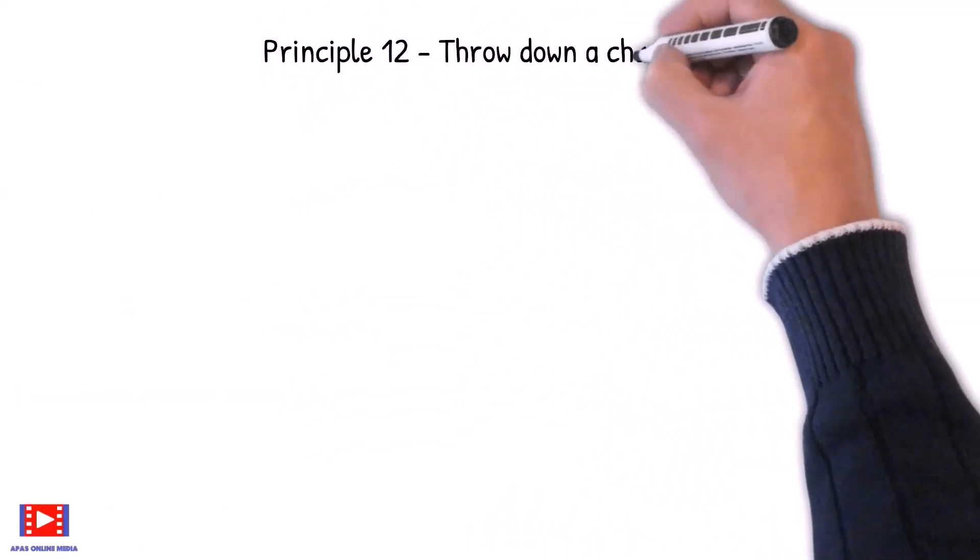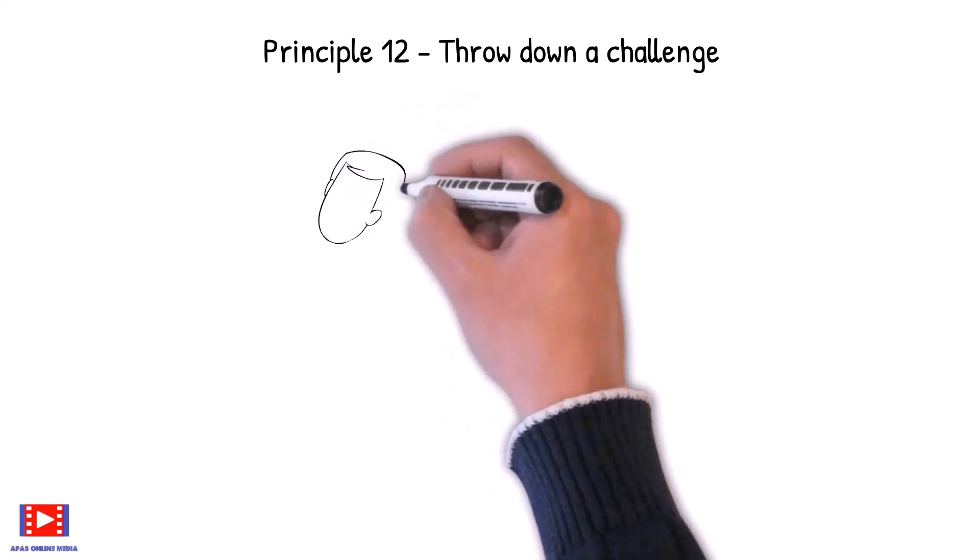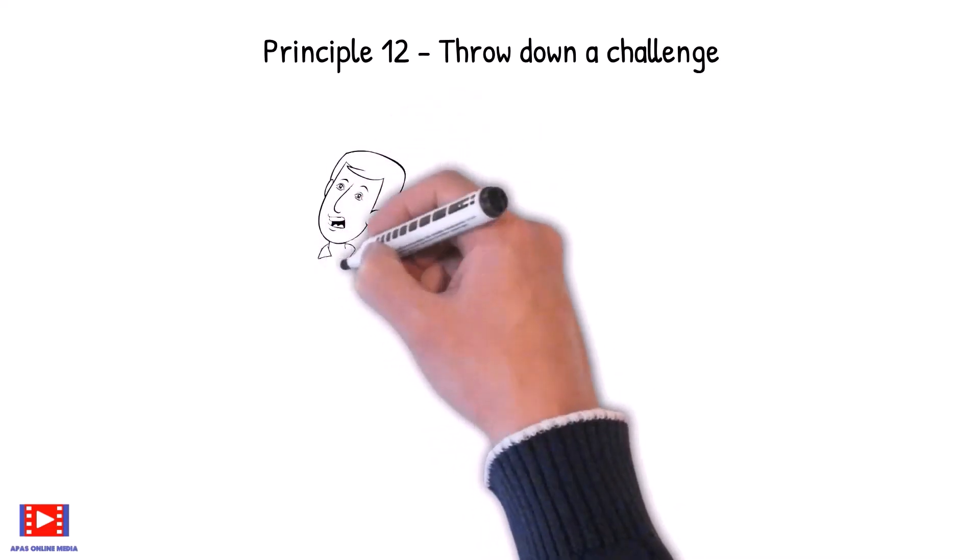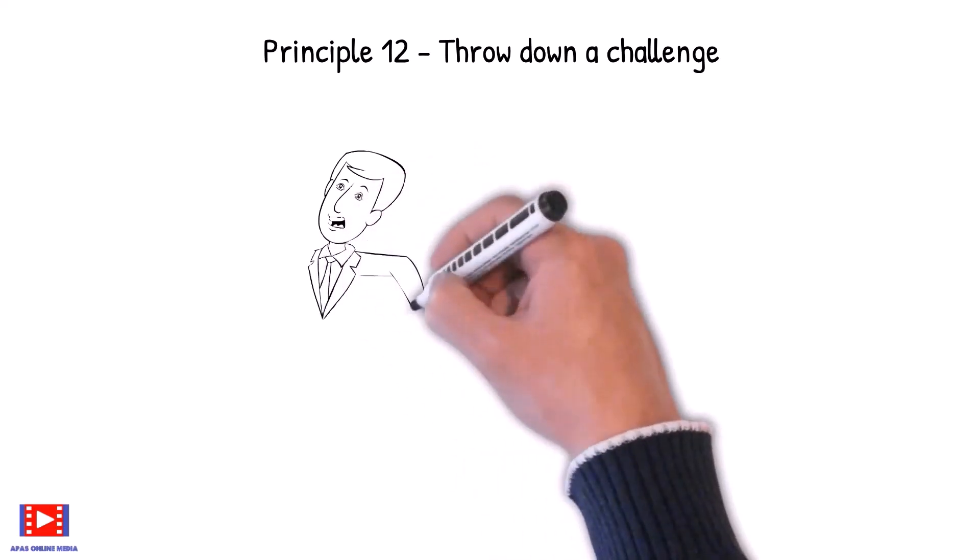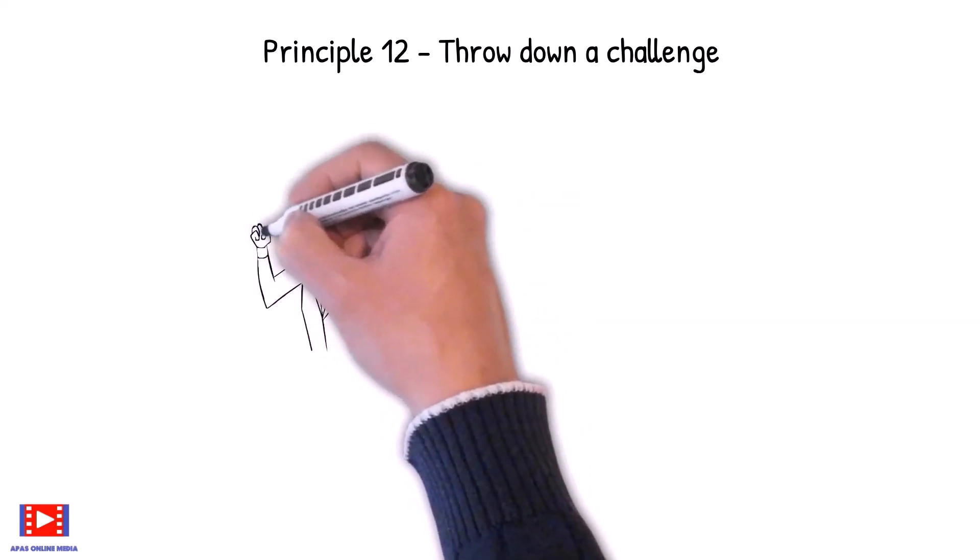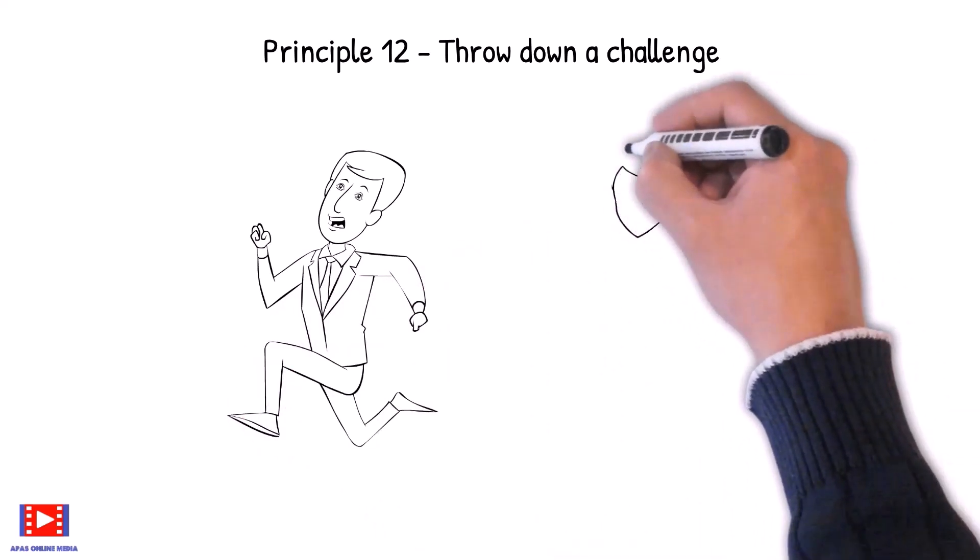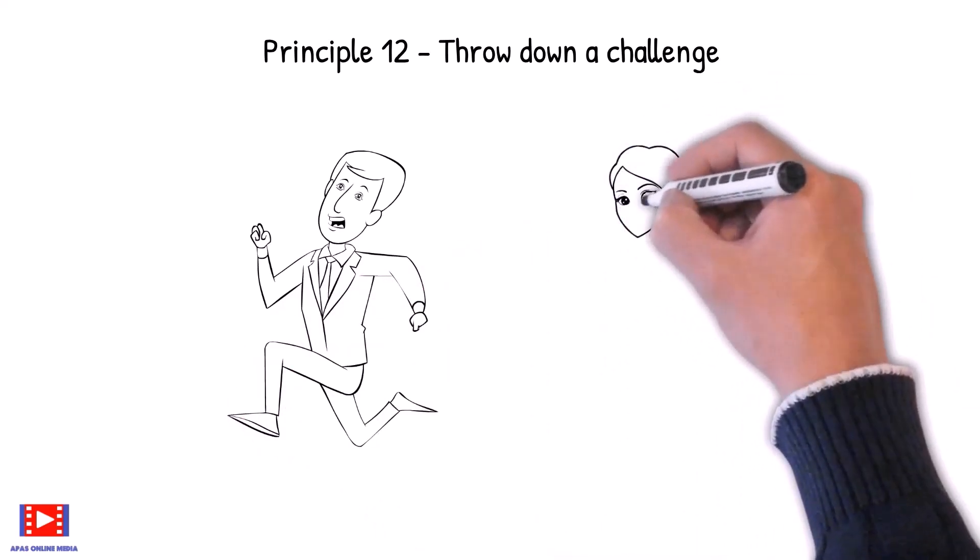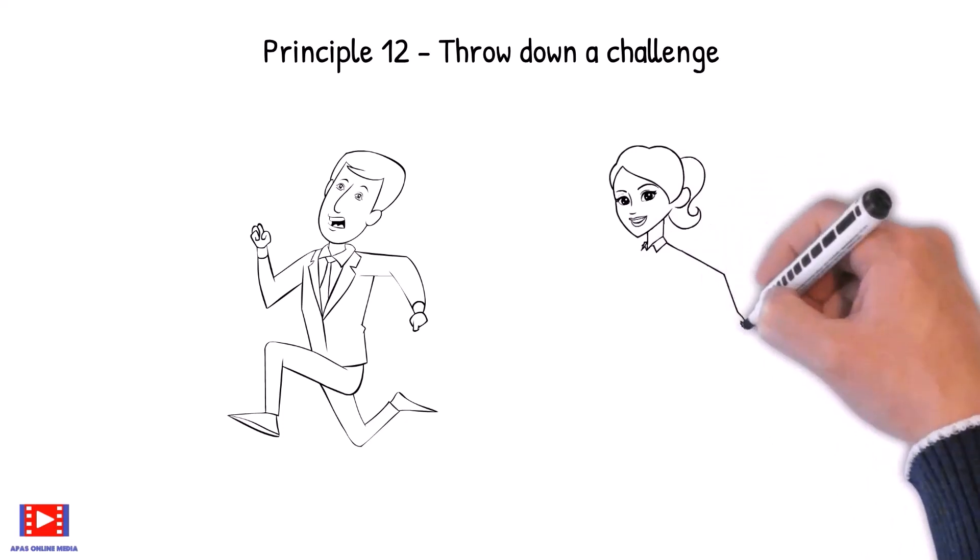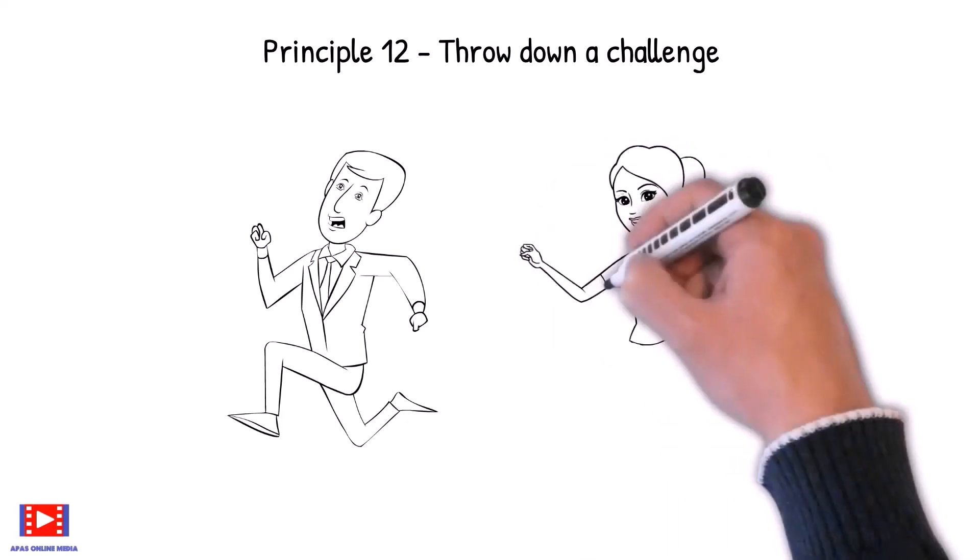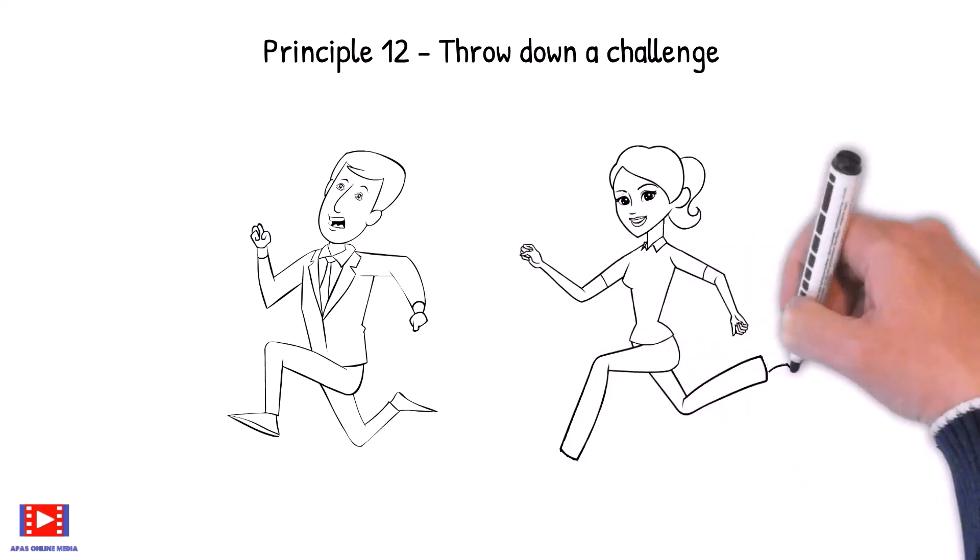Principle 12: Throw down a challenge. Every successful person loves the game. Every successful person also loves the chance for self-expression, the chance to prove their worth, to excel and to win. And that is the reason we should throw down a challenge. When nothing else works, we should try this.